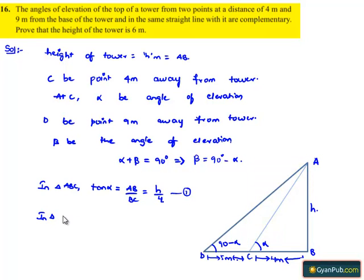Now in triangle ABD, tan(90 minus alpha) is equal to opposite side AB by adjacent side BD, which is equal to h divided by 9. That is let it be as equation number 2, which implies tan(90 minus alpha) can be written as cot alpha, that is equal to h by 9. Which implies cot alpha can be further written as 1 by tan alpha.